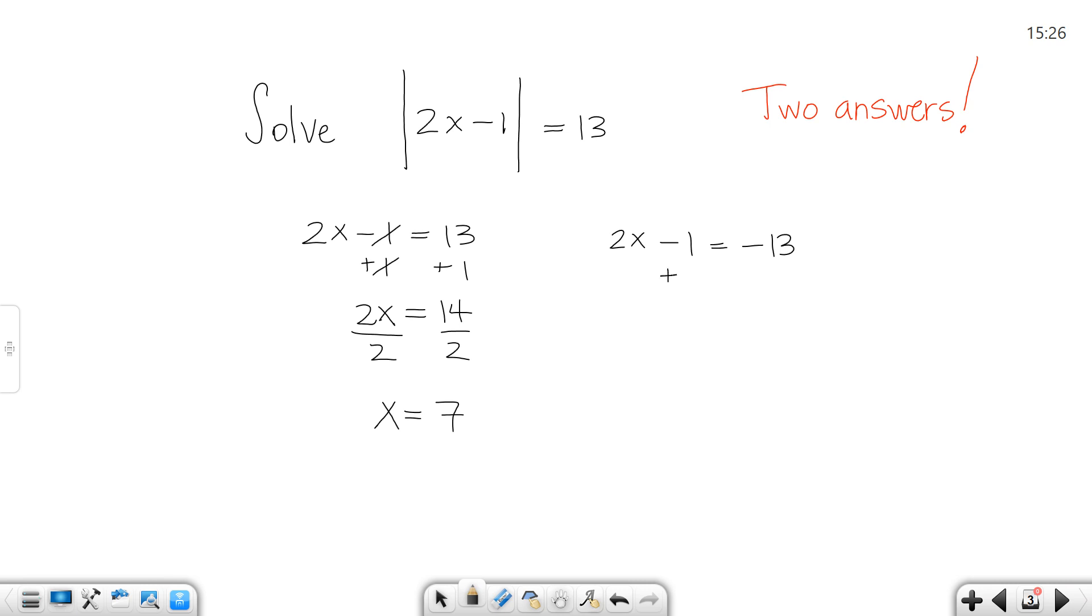On the other side, I'll add 1 to both sides. Please watch your sign. When I do that, I get a negative 12. I'll divide both sides by 2, and x would equal a negative 6. So my two answers are 7 and negative 6.